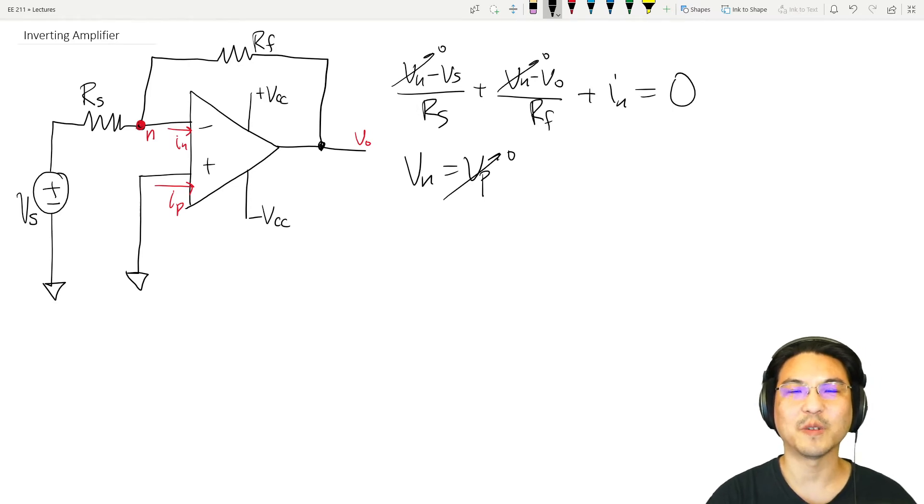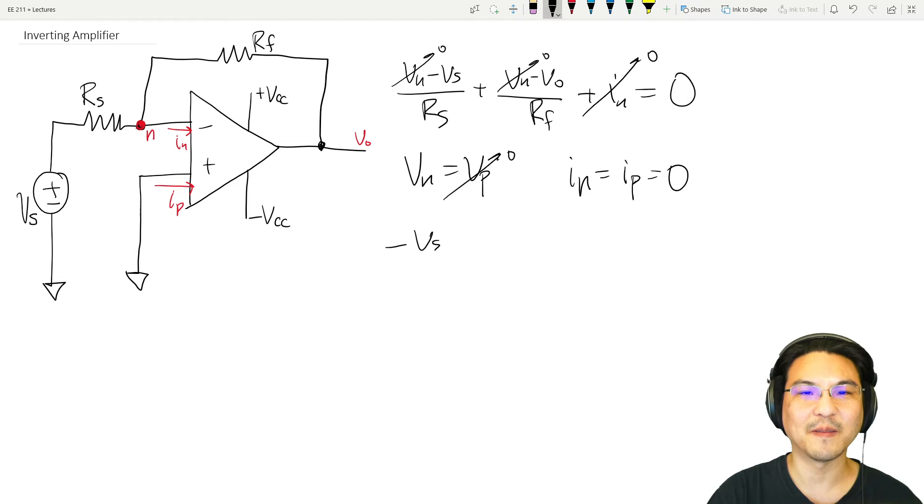What was the other idealization? The current going in here is zero, the current going in here is zero. So that means this is zero.